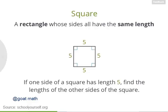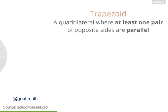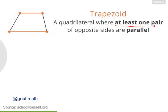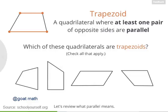Let's switch gears and talk about another kind of quadrilateral — a trapezoid. A trapezoid is a quadrilateral where at least one pair of opposite sides are parallel. Here's an example of a trapezoid. Notice that these two sides are parallel, while the other two sides are not. As long as at least one pair of opposite sides is parallel, a quadrilateral is a trapezoid. Now which of these other quadrilaterals are also trapezoids?